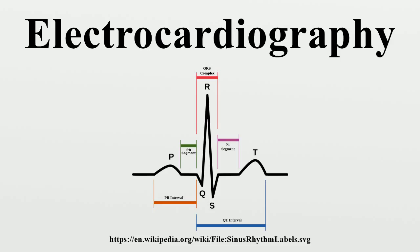The coronary artery that has been occluded can be identified in an ST-elevation myocardial infarction based on the location of ST elevation. The LAD supplies the anterior wall of the heart and therefore causes ST elevations in anterior leads. The LCX supplies the lateral aspect and causes ST elevations in lateral leads. The RCA usually supplies the inferior aspect and causes ST elevations in inferior leads.